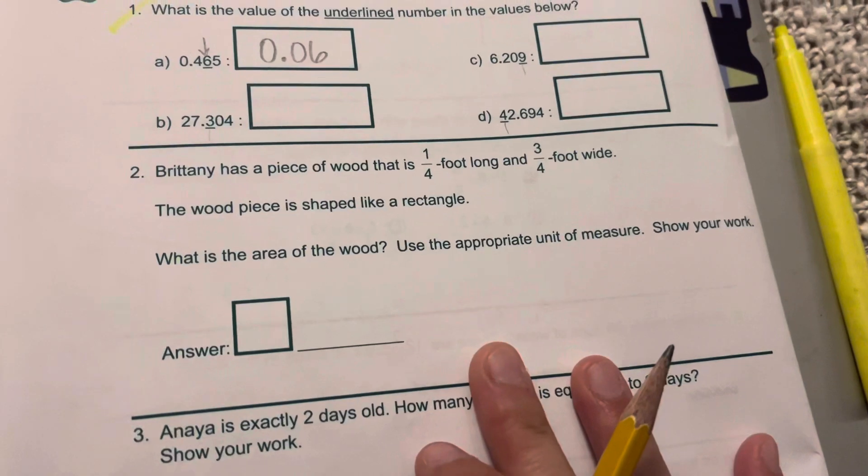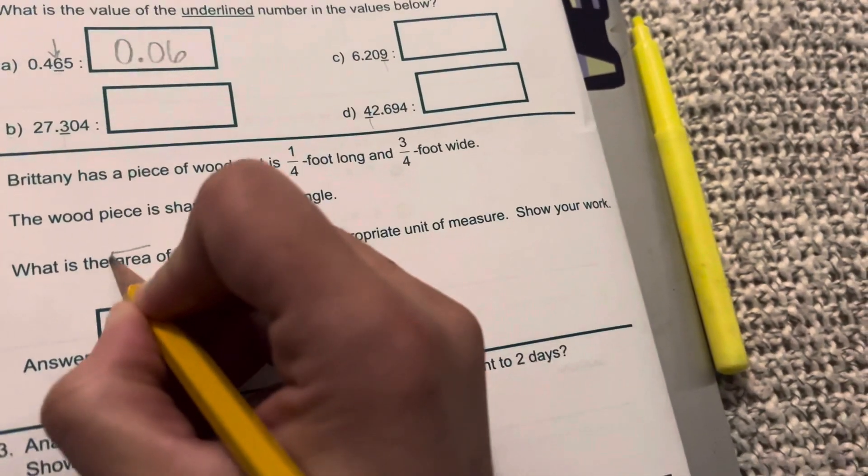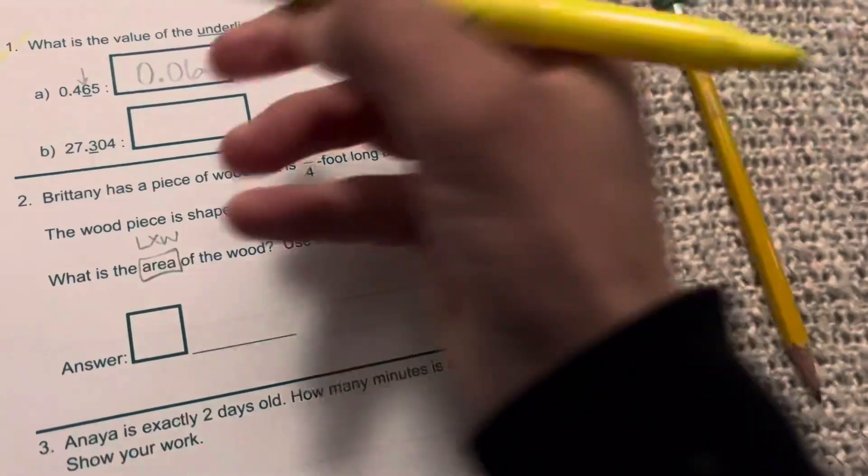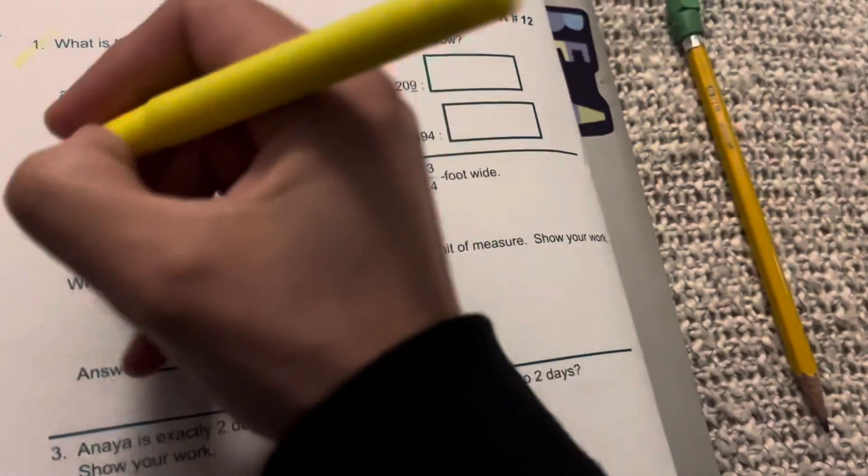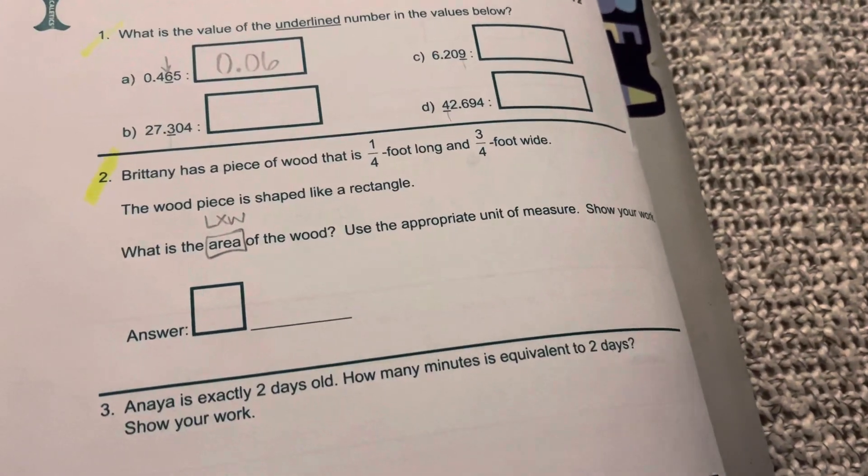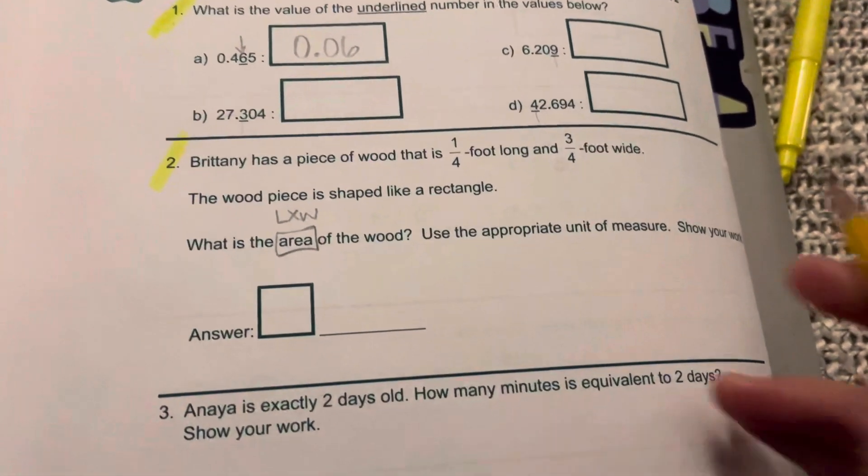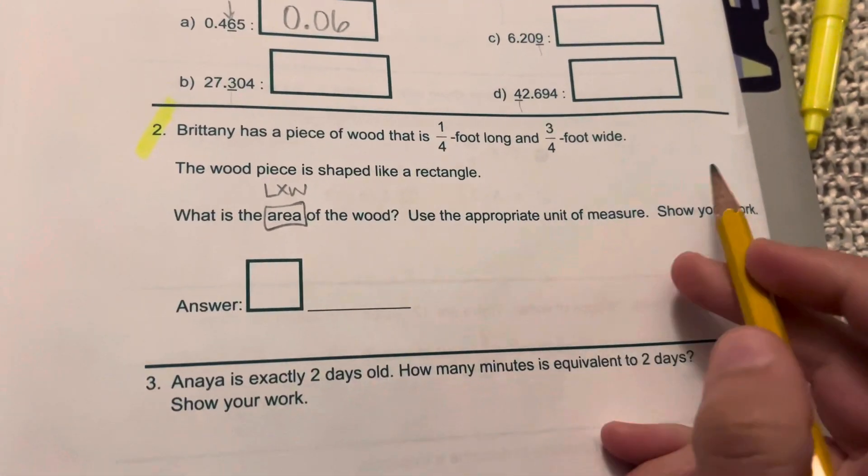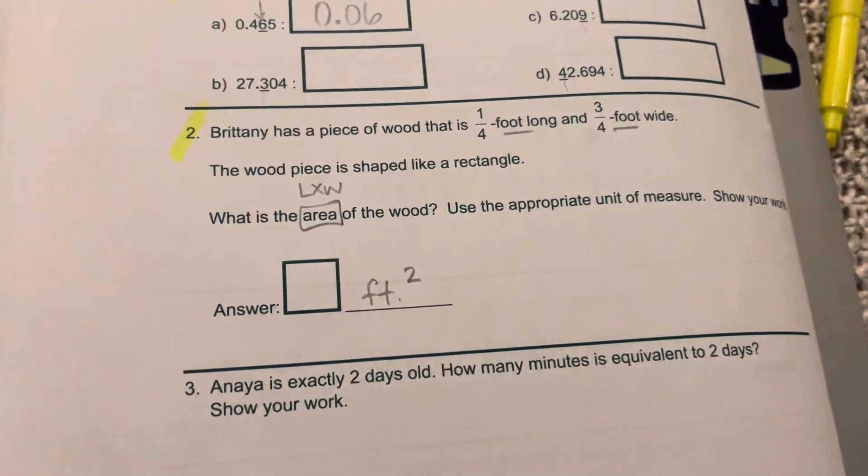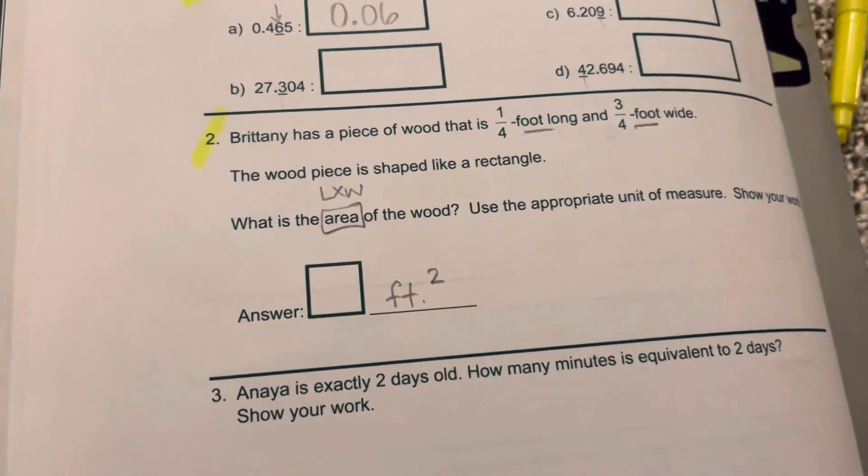Number two, it's asking you for the area. The area is length times width. So Brittany has a piece of wood that is one-fourth foot long and three-fourths foot wide. The wood piece is shaped like a rectangle. What is the area of the wood? Well, they're both being measured in feet and its area. And you're multiplying two things together. So area is squared. You just multiply those two fractions and you'll be fine.